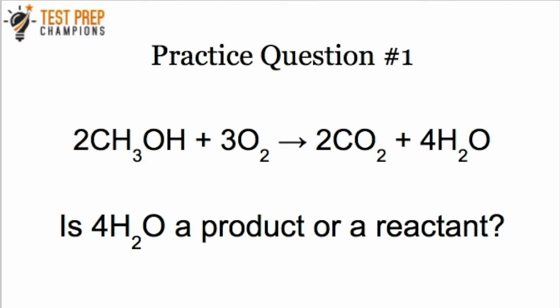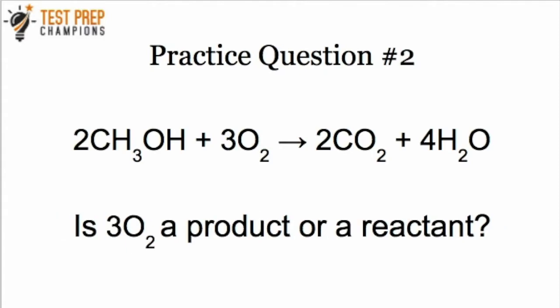Practice question: look at the reaction shown on screen and tell me — is 4H2O a product or a reactant? The correct answer is a product. We see that 4H2O appears on the right-hand side of that arrow, so that's how we know it's a product. Next question: is 3O2 a product or a reactant? The correct answer is a reactant. We see 3O2 appears on the left-hand side of that arrow, so that's how we know it's a reactant.